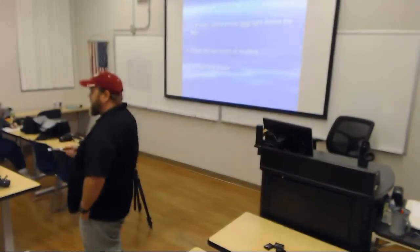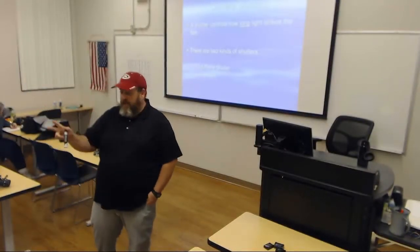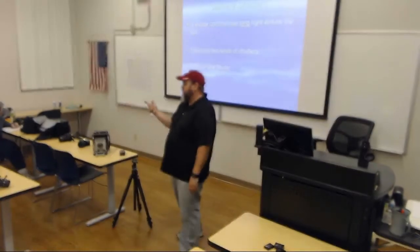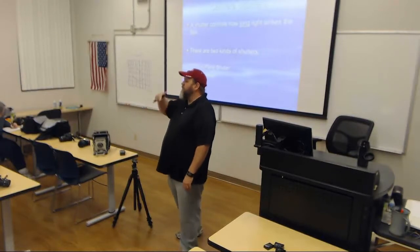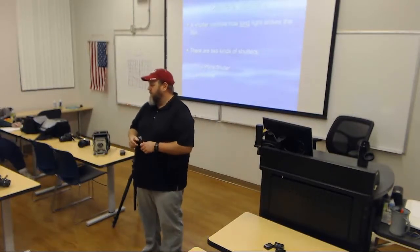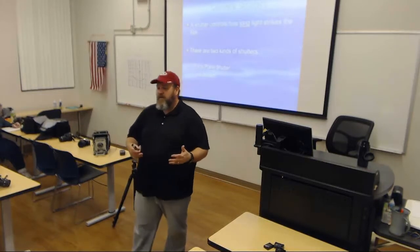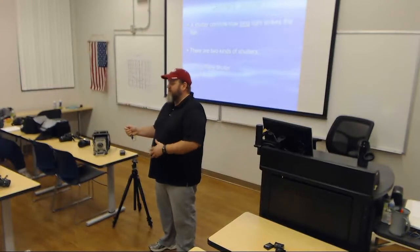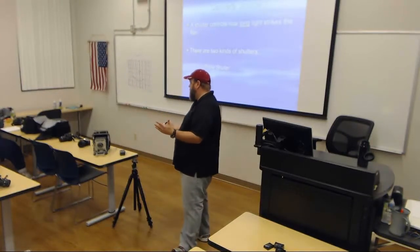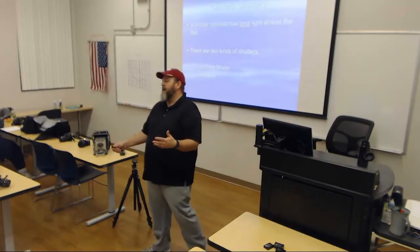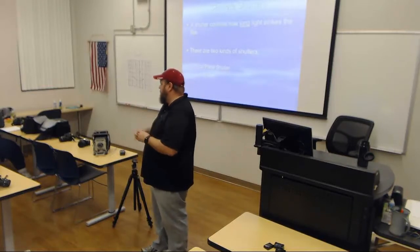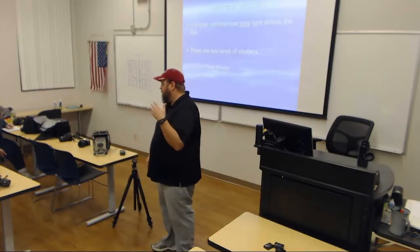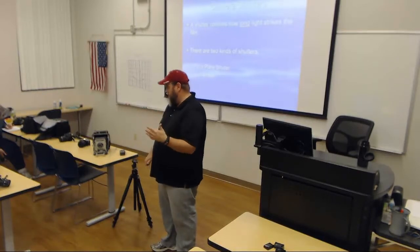On almost all cameras manufactured today, there are two basic types of shutters: the focal plane shutter and the leaf shutter. The one you are most likely to come across is the focal plane shutter, because that's the type incorporated in almost all SLR cameras — both digital and film SLR. Rangefinder cameras and many digital point-and-shoot cameras may have a leaf shutter instead.